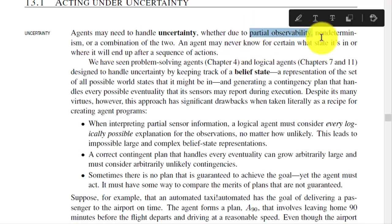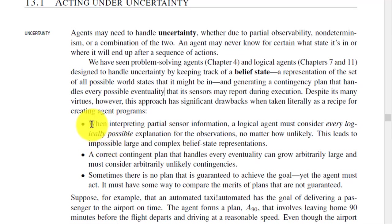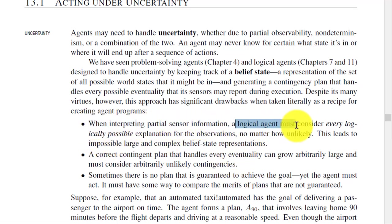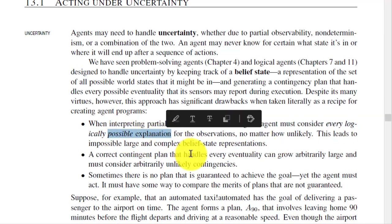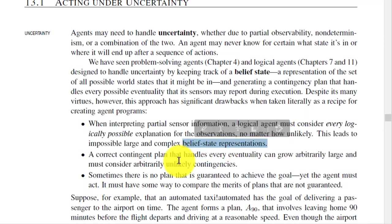We are going to consider uncertainty in this approach. When interpreting partial sensor information, a logical agent must consider every logically possible explanation for the observations, no matter how unlikely. This leaves impossibly large and complex belief state representations.